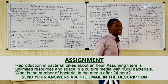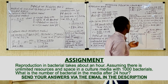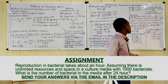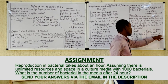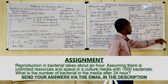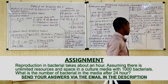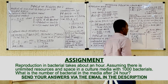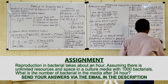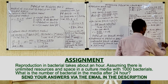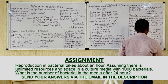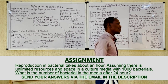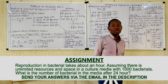Now estimating for three years: N = 1,000 × 3³ = 1,000 × 27 = 27,000 fish. For four years: N = 1,000 × 3⁴ = 1,000 × 81 = 81,000 fish. You can estimate for as many years as needed using this method. If you have any questions, you can send them to our email.